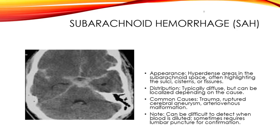Traumatic subarachnoid hemorrhage, SAH, appears as hyperdense areas in the subarachnoid space following the basal cisterns or fissures.